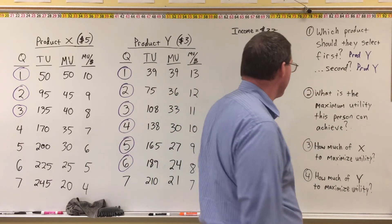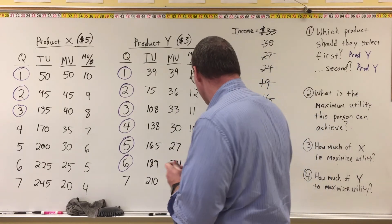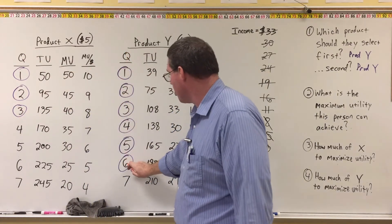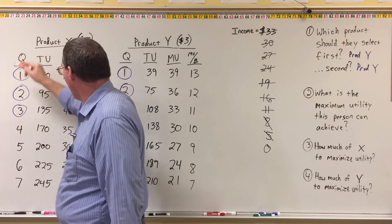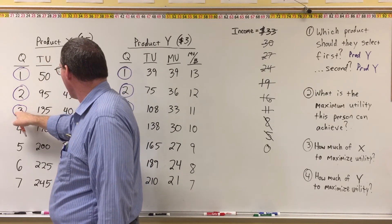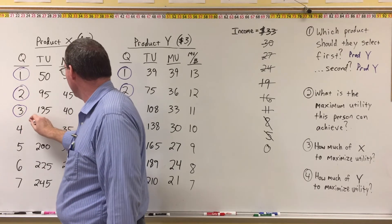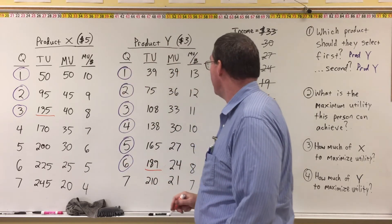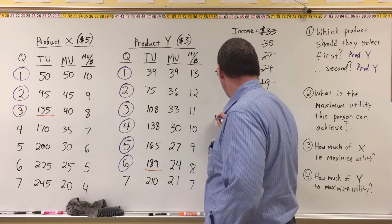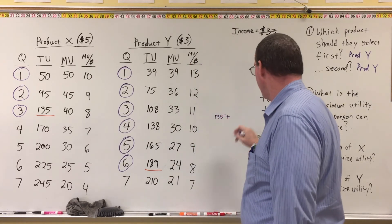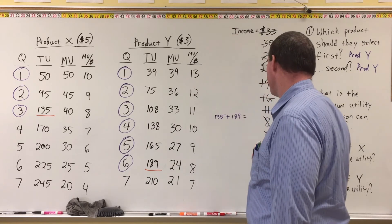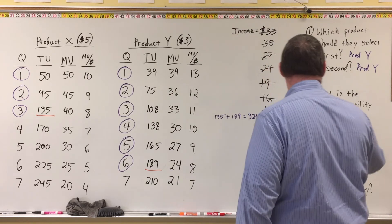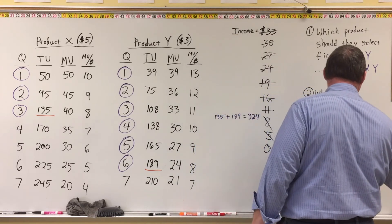All right, now it says, what is the maximum utility that this person can achieve? If you recall, I said that the way you calculate the maximum utility is you go to the highest quantity on both of the products and go to the total utility column. So we'll go to the highest quantity in product X. Highest we're getting is 3. Total utility is 135. Highest quantity in product Y for us is 6. Total utility is 189. Add those two numbers together. Here, 135 plus 189 is going to give us, let's see, 324. Therefore, maximum utility a person can achieve is 324.